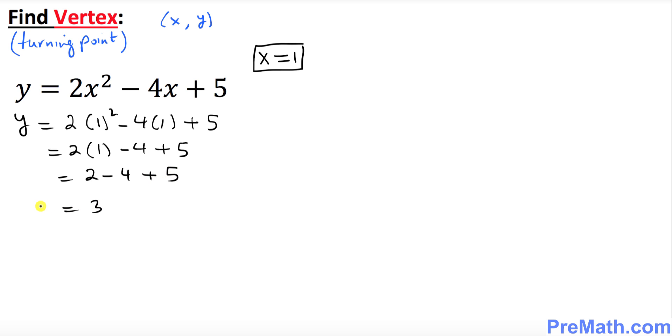That's going to give you y equals 3. So that's our x, y value. Our vertex is going to be simply x is 1, y is 3, and that is our vertex.